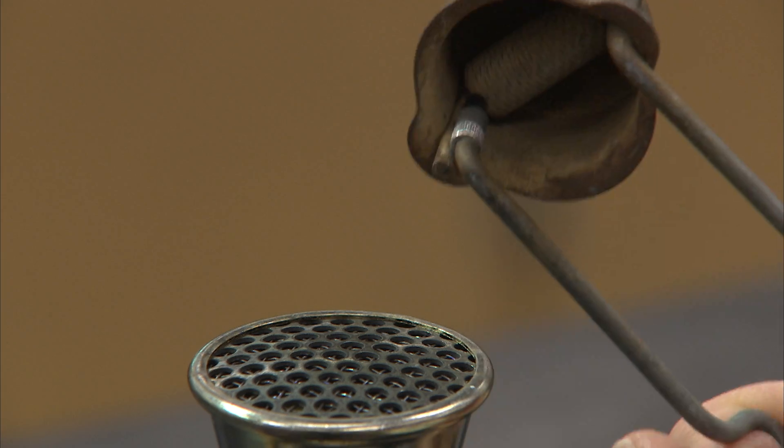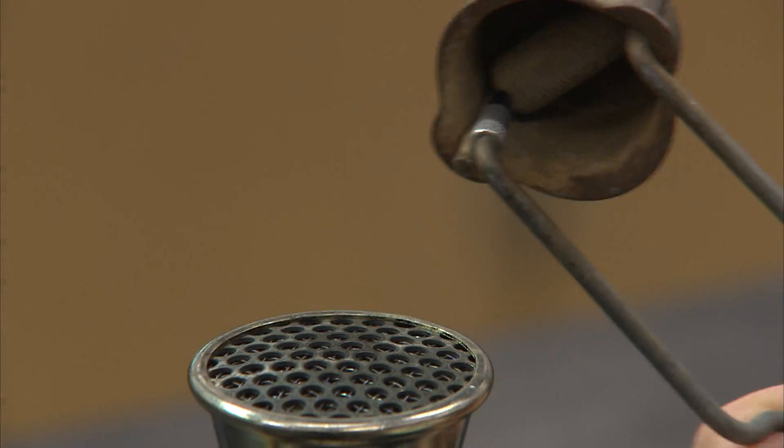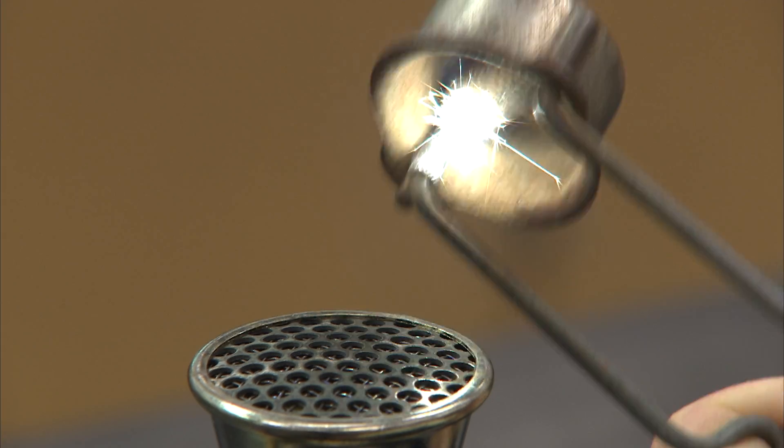To light the flame, the gas is turned on fully and a flint striker is brought to the burner to ignite the gas. If the sparks do not fall close enough to the gas, it will not ignite.